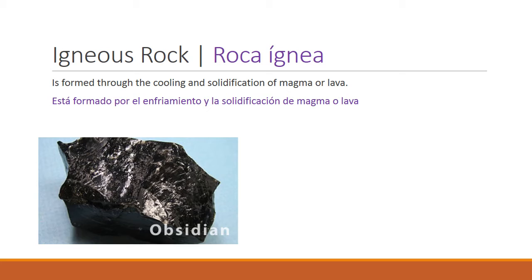Igneous rock is formed through the cooling and solidification of magma or lava. It can form either inside or outside of the Earth's crust, and how it forms changes the crystalline structure. In this example, we can see obsidian — many of you may be familiar with it from Minecraft.